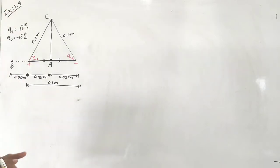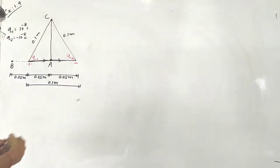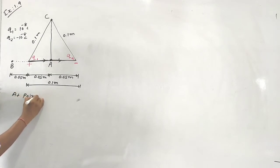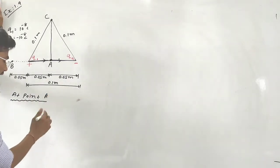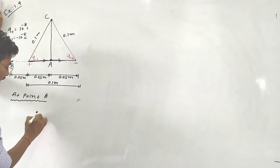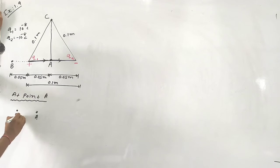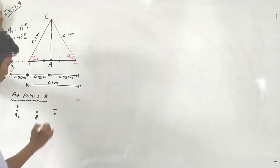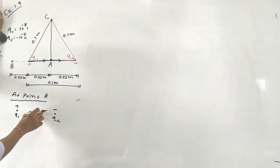Step 1: we have to find out the electric field at points A, B, and C. For point A, we draw the free body diagram. We have charge q1 as a positive charge and q2 as a negative charge. We need to find the electric field at point A.